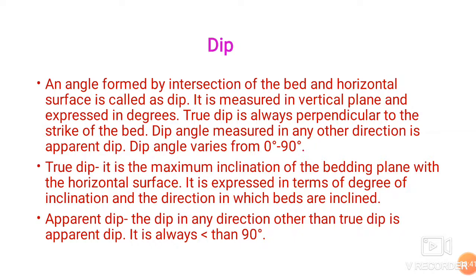When the dip angle is 90 degrees, it is called true dip. When it ranges between 1 to 89 degrees, it is called apparent dip. True dip is the maximum inclination of the bedding plane with the horizontal plane — the maximum angle being 90 degrees. It is expressed in terms of degree of inclination and the direction in which beds are inclined. Apparent dip is the dip in any other direction other than true dip, and it is always less than 90 degrees.